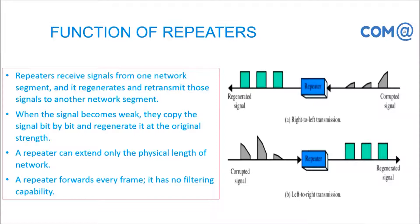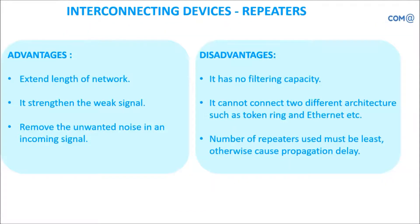It can extend only the physical length of the network, not a logical connection. In a factory, you can put one repeater and beyond that have a hub or switch, then connect systems to the hub. Advantage: it helps to extend the length of the network, strengthen weak signals, and remove unwanted noise, so data transmission may happen faster. Disadvantages: it has no filtering capability, cannot connect to different architectures, and the number of repeaters used should be less — not more than five to ten — otherwise the purpose will be wasted.